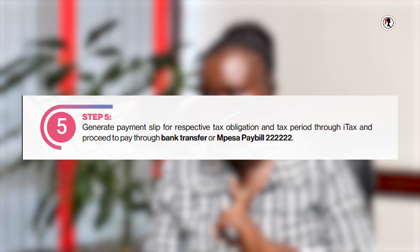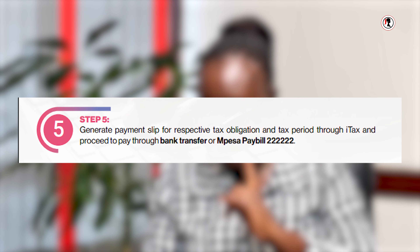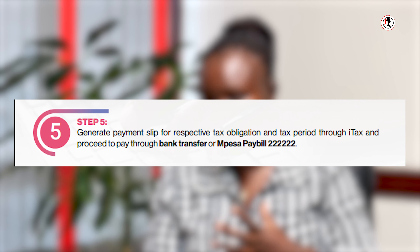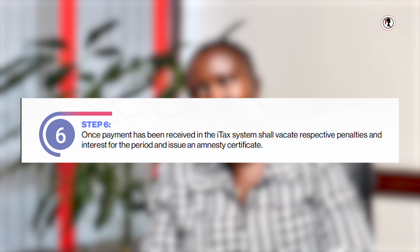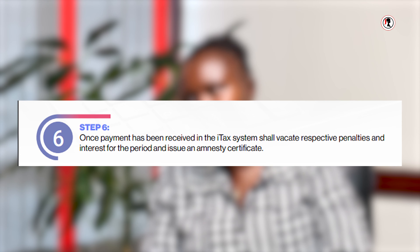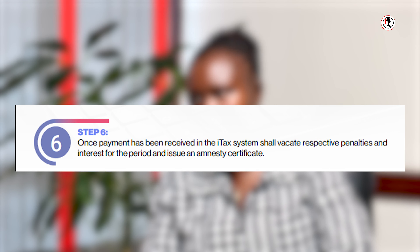Submission of the application does not give you amnesty. Amnesty comes upon payment before 30th of June. That is how the application process works. There are four ways in which a taxpayer will know they have gotten amnesty, or they can activate the amnesty.